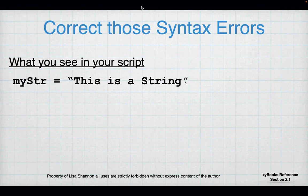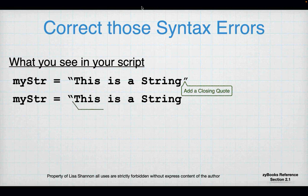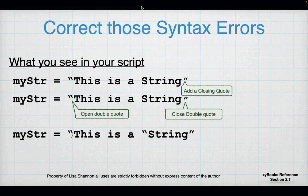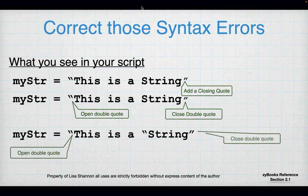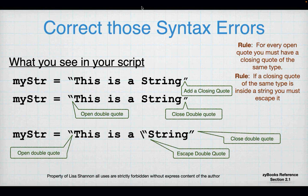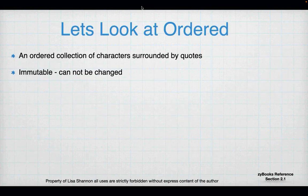Here's how to correct those errors. A missing quote — you add a quote. If a single quote appears where a double quote should be, change it to a double quote so it's balanced. If a closing quote of the same type is inside a string, you have to escape it with a backslash. That's what the escape sequence does — it allows a quote to exist inside the string.